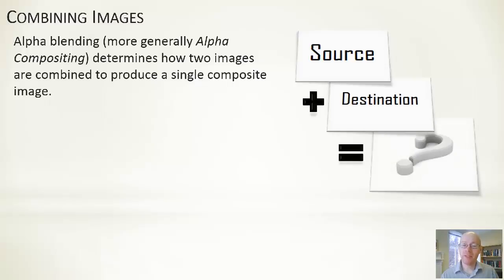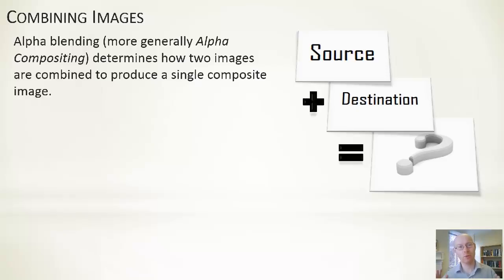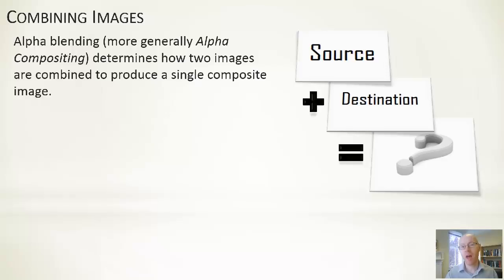The general form you can see in this slide here. We have a source image — that's the thing we want to draw — and a destination image, which is where we are drawing it to. That destination could be a blank single-coloured region or an existing region with different elements. The question of how we take the source and add it to the destination to get some output is the process known as compositing.